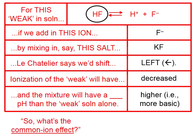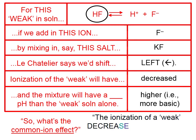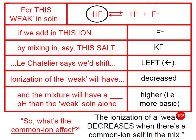This lesson was on the common ion effect. All four of these examples show that the common ion effect is that the ionization of a weak decreases when there's a common ion salt in the mix.